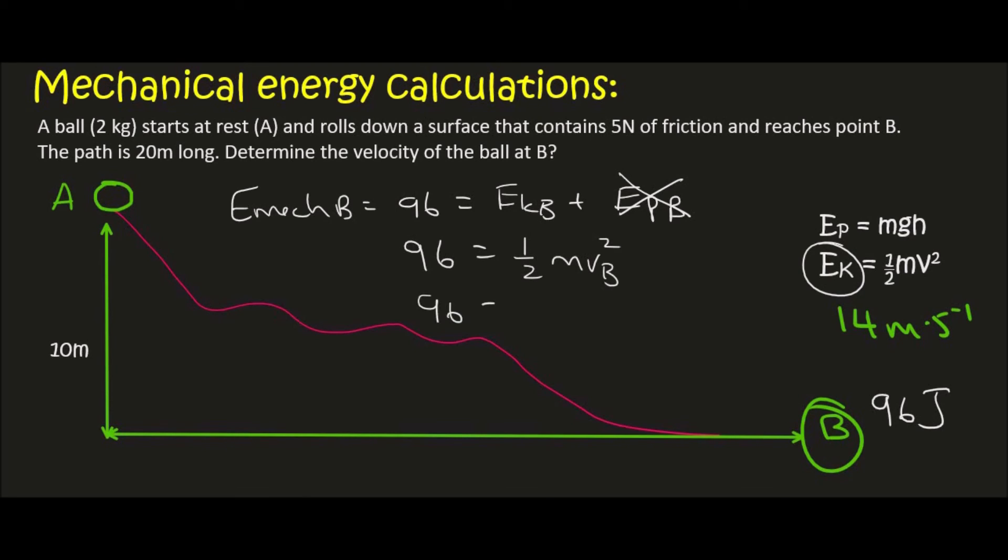And so 96 is equal to a half. The mass is 2 but we don't know the velocity. Half of 2 is just 1 so that part falls away. And so 96 is equal to velocity squared. We then square root 96. And so we end up with a velocity of B equal to 9.8 meters per second.